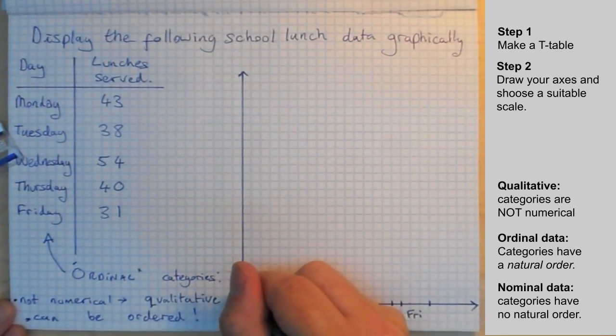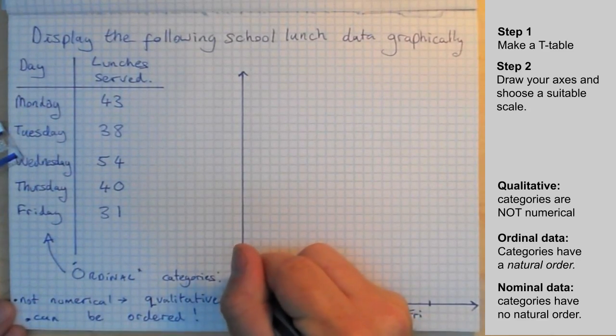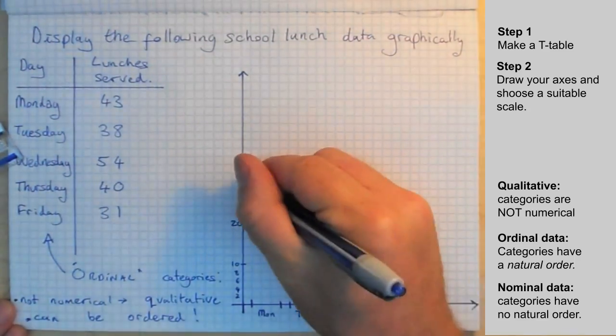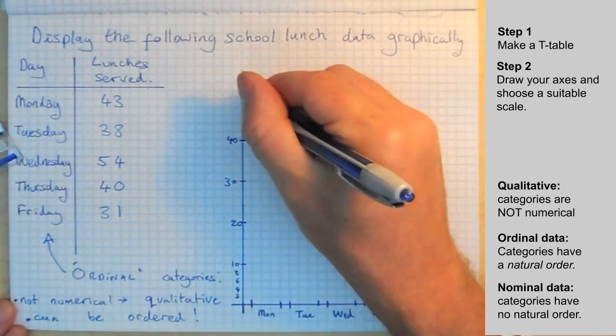And up along the y-axis here, every square is going to be worth two lunches. So we're going to go 2, 4, 6, 8, 10, then count to 20, then to 30, then to 40, and then to 50.